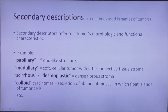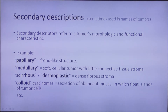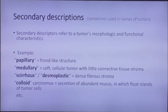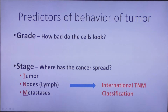Secondary descriptors — again with some inconsistencies — refer to the tumor's morphological and functional characteristics. For example, the term 'papillary' means the tumor has frond-like structures. 'Medullary' signifies a soft and cellular tumor with little connective tissue stroma, whereas 'scirrhous' or 'desmoplastic' means the tumor has a lot of dense fibrous stroma. 'Colloid carcinoma' means secretion of abundant mucus in which float islands of tumor cells.